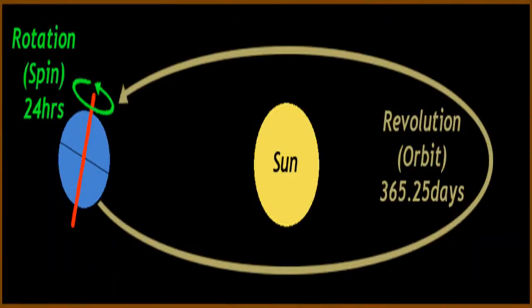Children, Earth completes its one rotation in 24 hours and one revolution around the sun in a year, that is 365.25 days. After 4 years, it forms the leap year, which has 366 days.